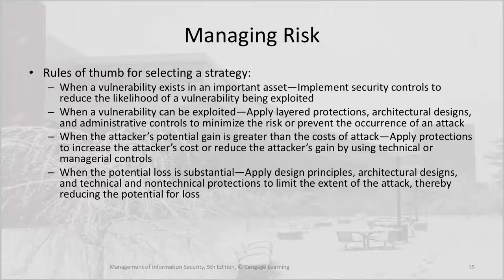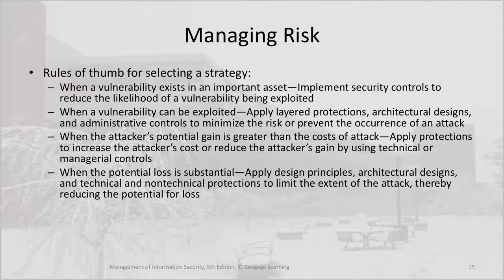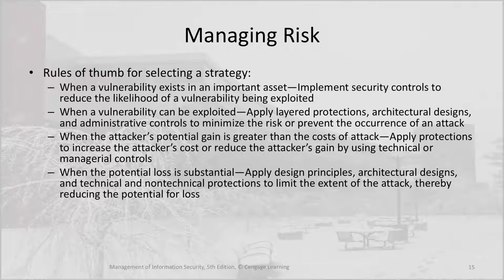A few rules of thumb for selecting a strategy: When a vulnerability exists in an important asset, implement security controls to reduce the likelihood of a vulnerability being exploited. When a vulnerability can be exploited, apply layered protections, architectural designs, and administrative controls to minimize the risk or prevent the occurrence of an attack. When the attacker's potential gain is greater than the cost of attack, apply protections to increase the attacker's cost or reduce the attacker's gain using technical or managerial controls. When the potential loss is substantial, apply design principles, architectural designs, and technical and non-technical protections to limit the extent of the attack, thereby reducing the potential for loss.